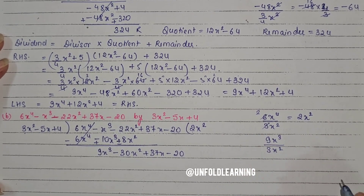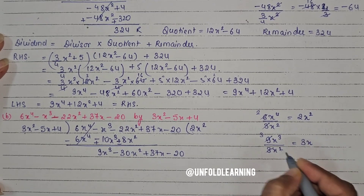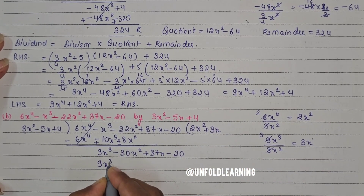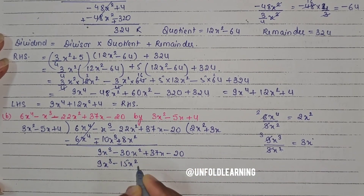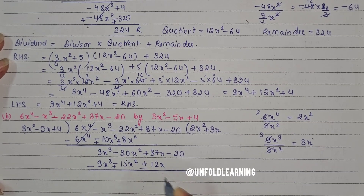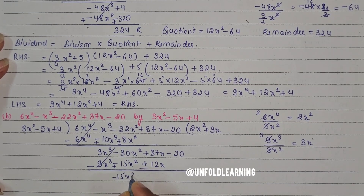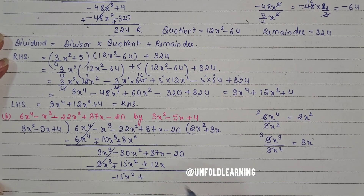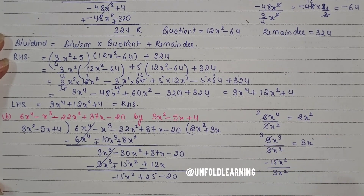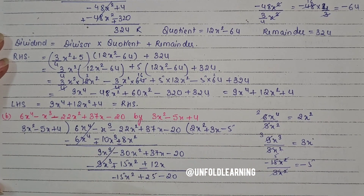Now divide 9x³ by x²: 3 threes are 9, giving plus 3x. Multiply 3x by the divisor: 9x³ minus 15x² plus 12x. Subtracting, the 9x³ cancels; minus 30 minus minus 15 gives minus 15x²; 37 minus 12 gives 25x, bringing down minus 20. Now divide minus 15x² by x²: minus 5. Multiply minus 5 by the divisor: minus 15x² plus 25x minus 20.